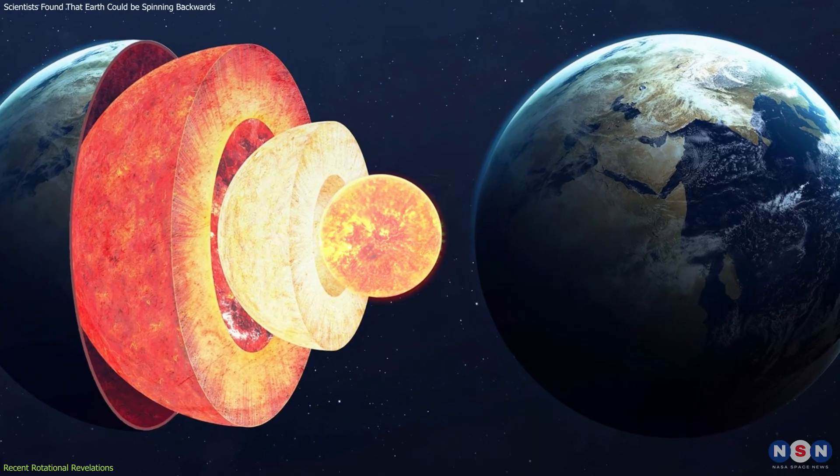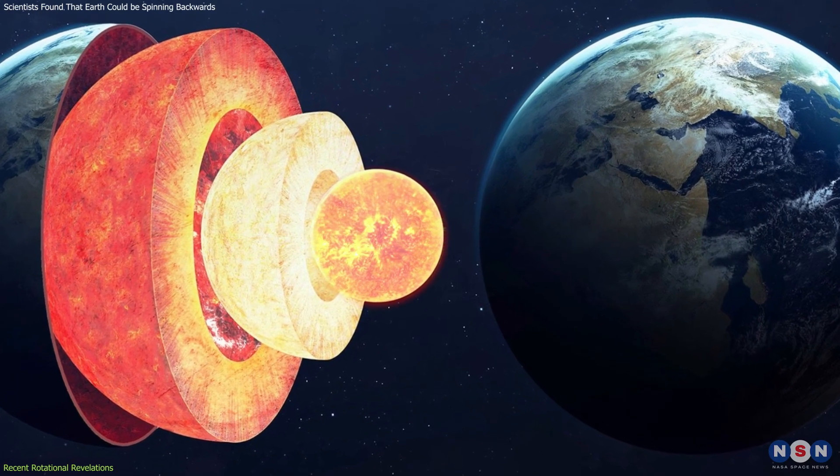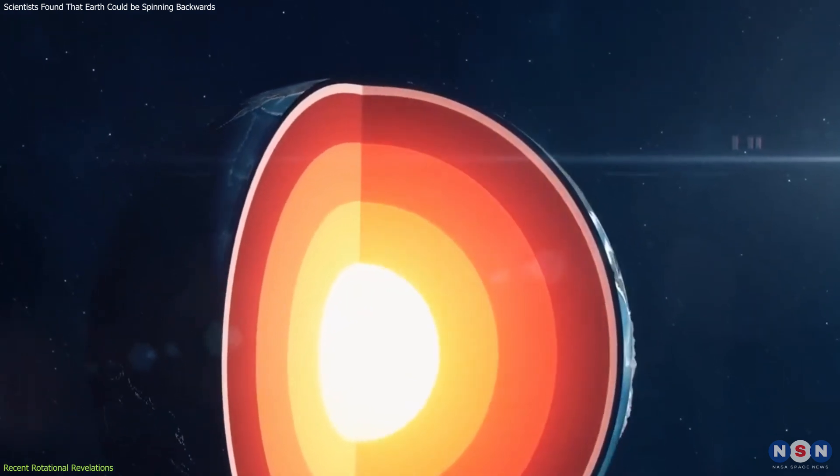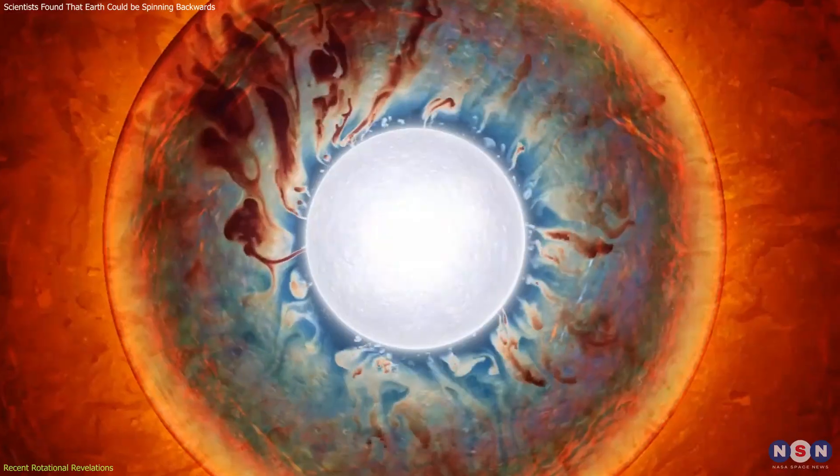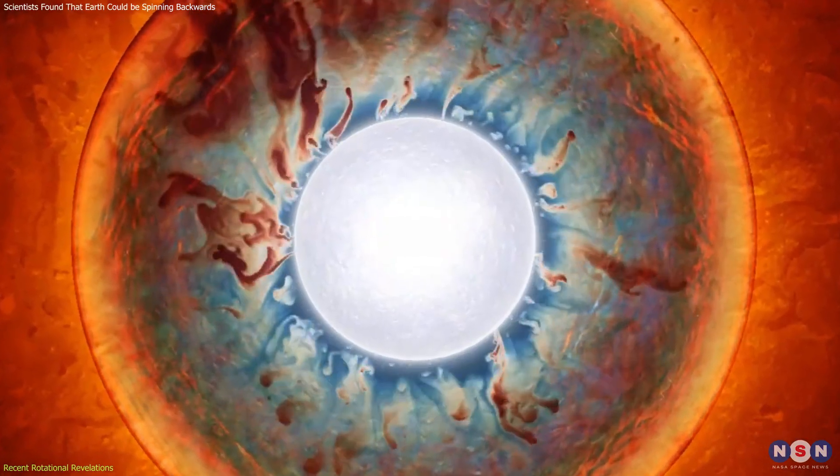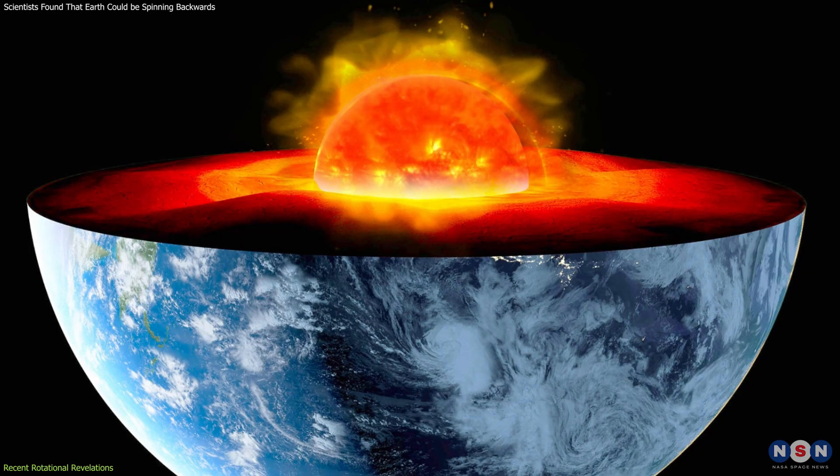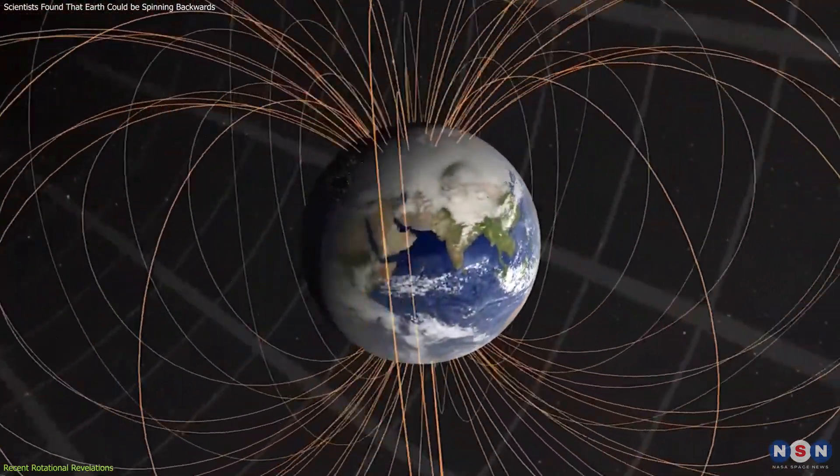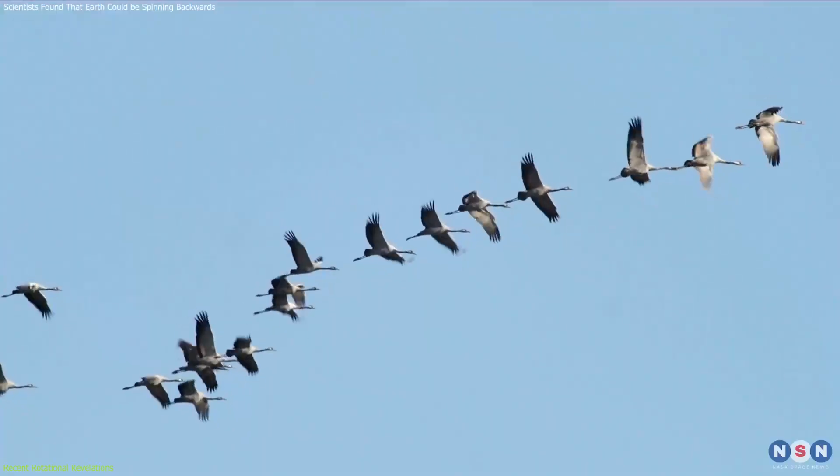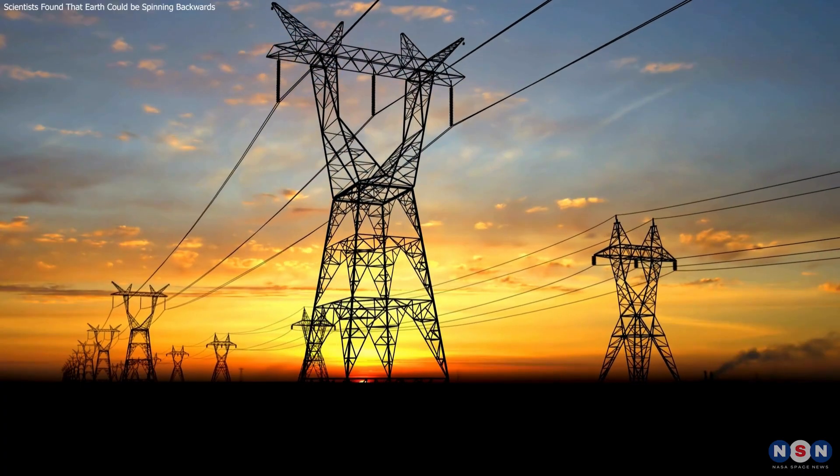The changes in the core's rotation could have significant implications for our understanding of the Earth's geodynamic processes. The core's movement affects the magnetic field generated by the flow of liquid iron in the outer core. A change in the spin of the inner core might influence the magnetic field's strength and orientation, which has direct implications for everything from animal migration to our electrical grids.